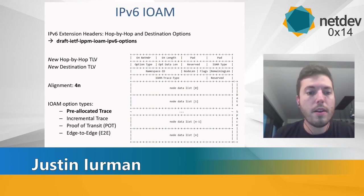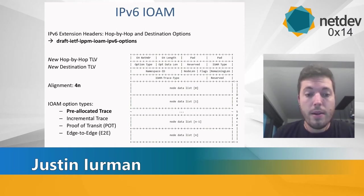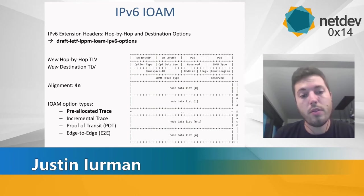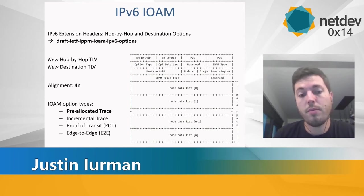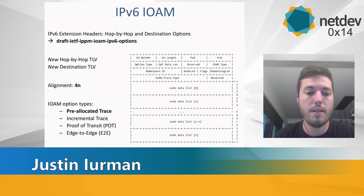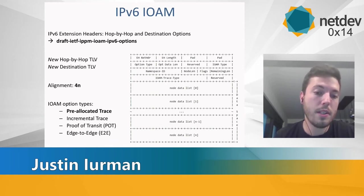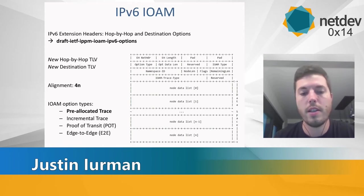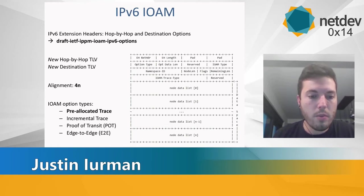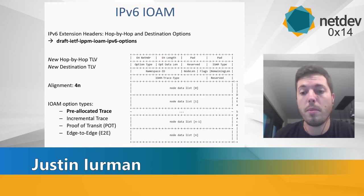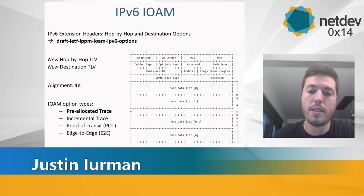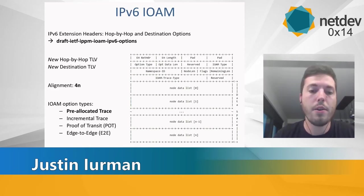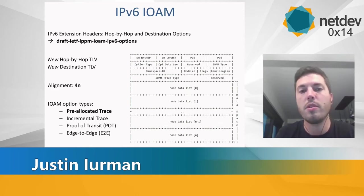IOAM options require an alignment of 4N so that each IOAM data item is aligned on its natural boundary. There are four different IOAM option types. The first two are the pre-allocated trace and the incremental trace — they are similar. In pre-allocated trace, the first node pre-allocates all the space for each node on the path. In incremental trace, each node is responsible for its own allocation and inserts its own data. The third is the proof of transit option, used to verify that a specific path was followed. The last one, more suited to a destination extension header, is the edge-to-edge option, for exchanging IOAM data between source and destination only.